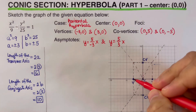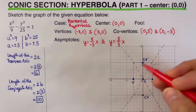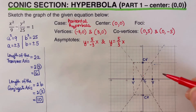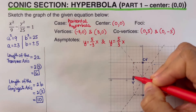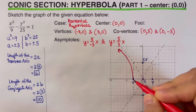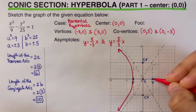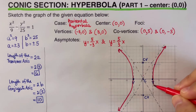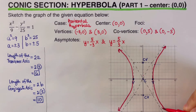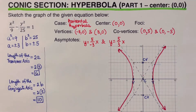Remember that the hyperbola connects to the vertices. The asymptotes and the rectangle help us draw the hyperbola. We draw the first branch and the second branch. The asymptotes guide us in sketching the hyperbola, and this is the graph of the given equation.